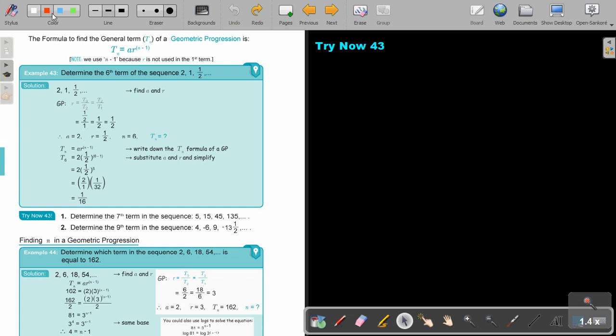I want you to stop the video and do try now 43 number 1. You can continue the video as soon as you are finished. Let's start. The sequence is 5, 15, 45, 135, and it's moving on. This is the first term, second term, third term, and fourth term.